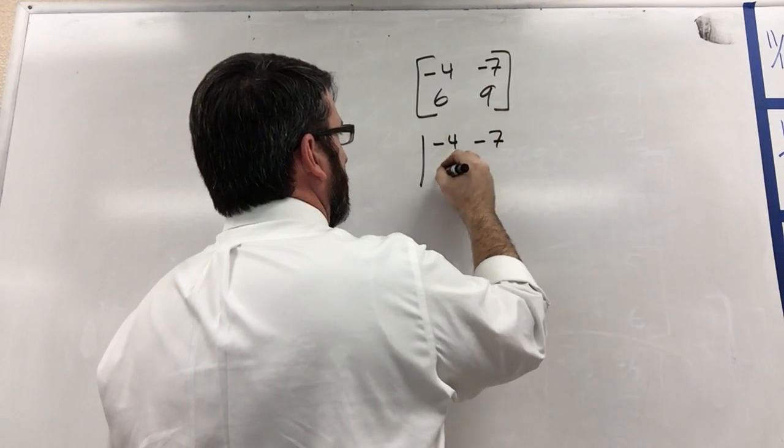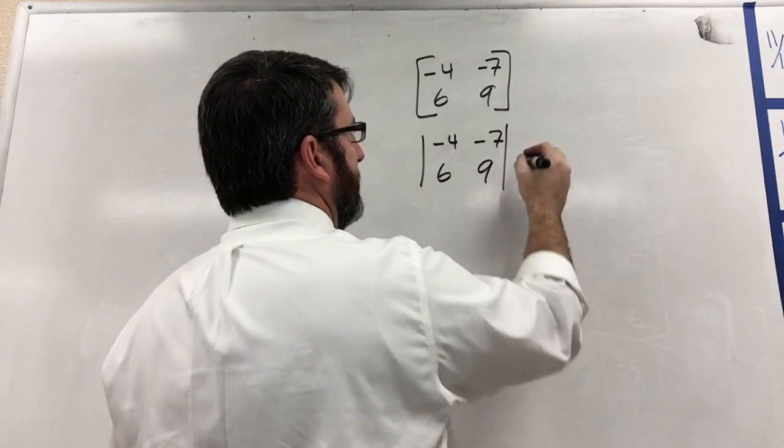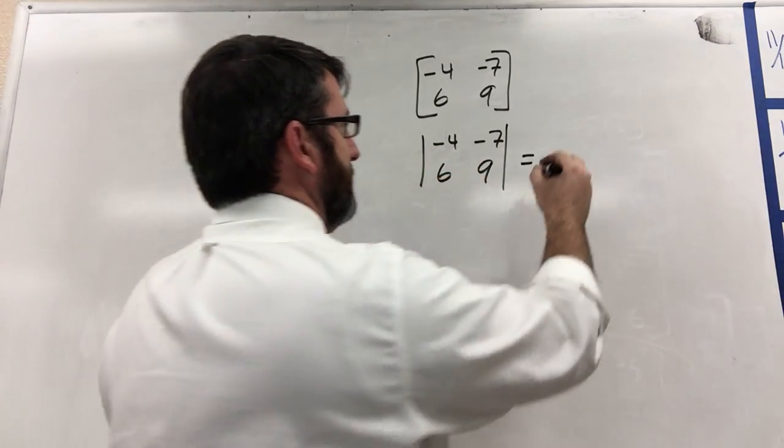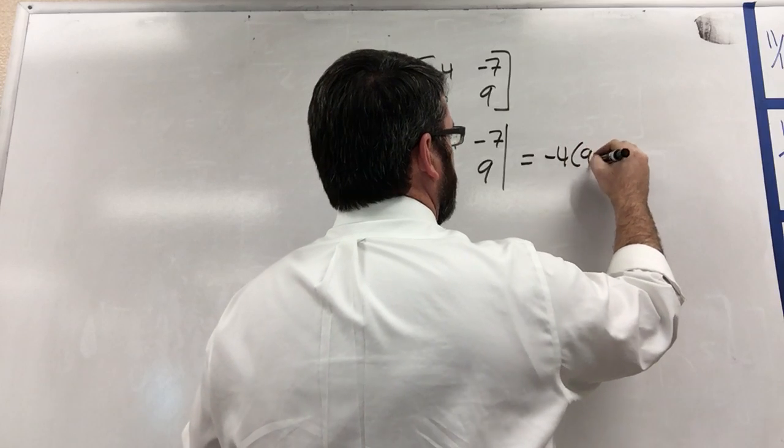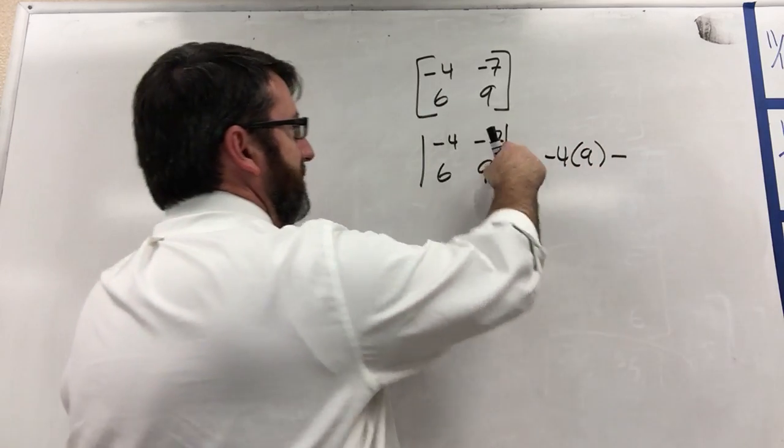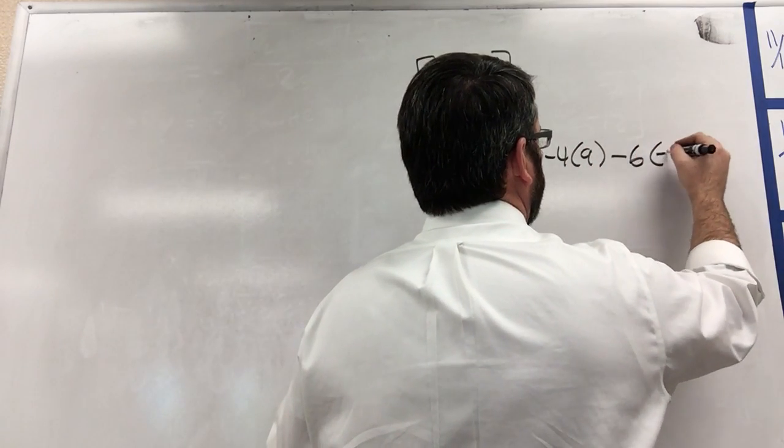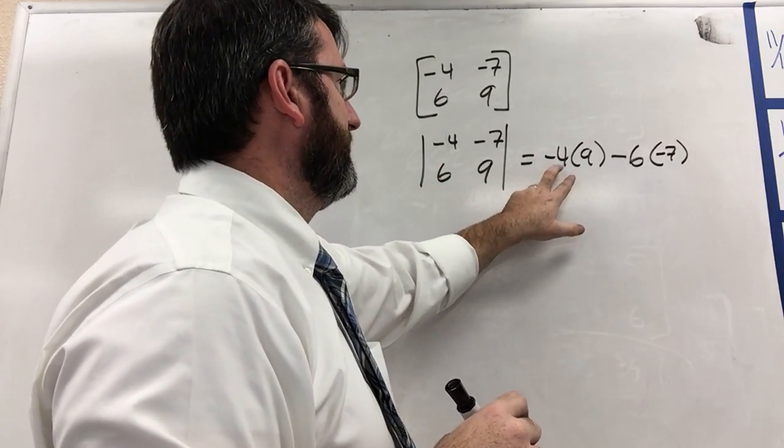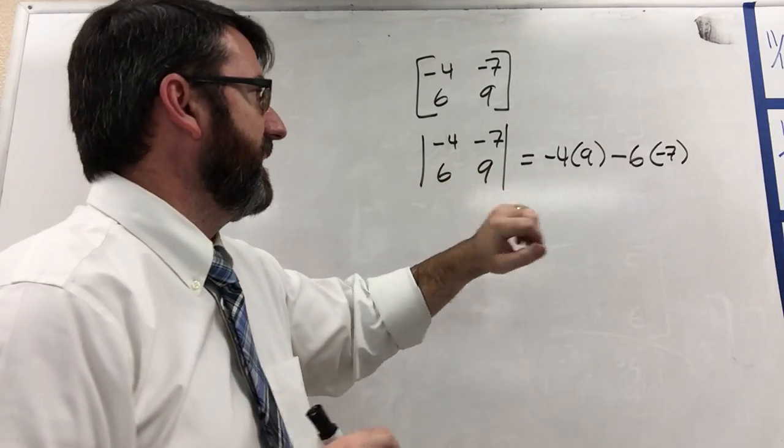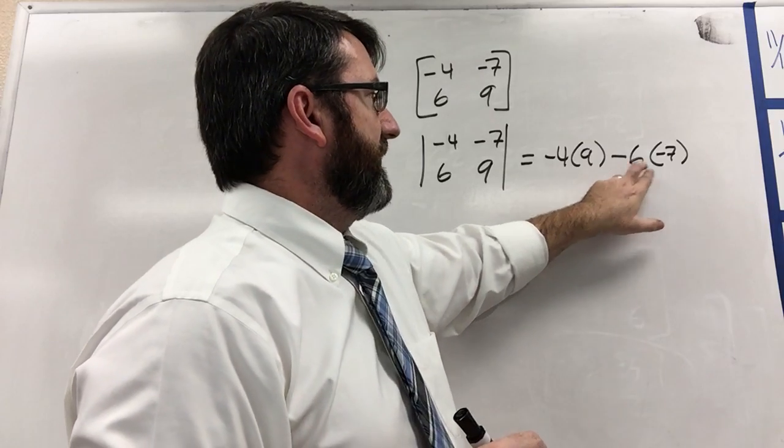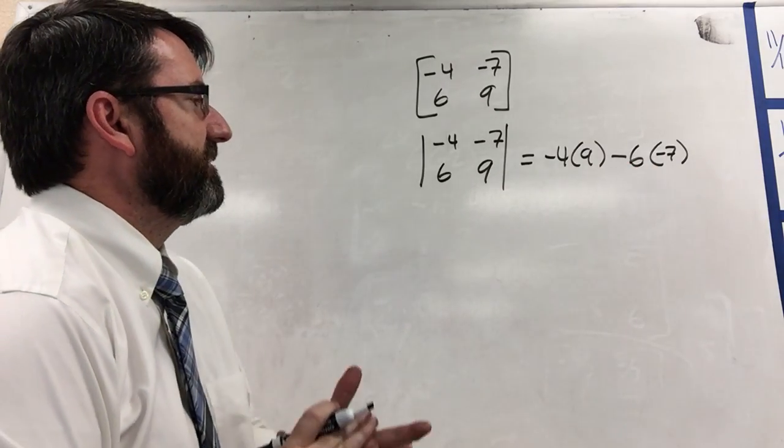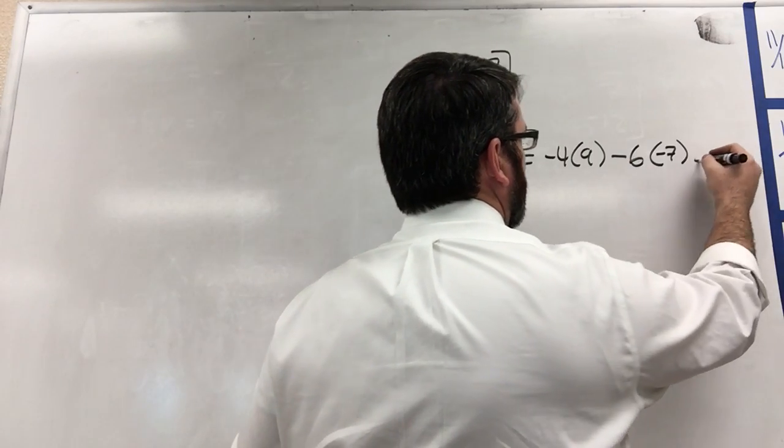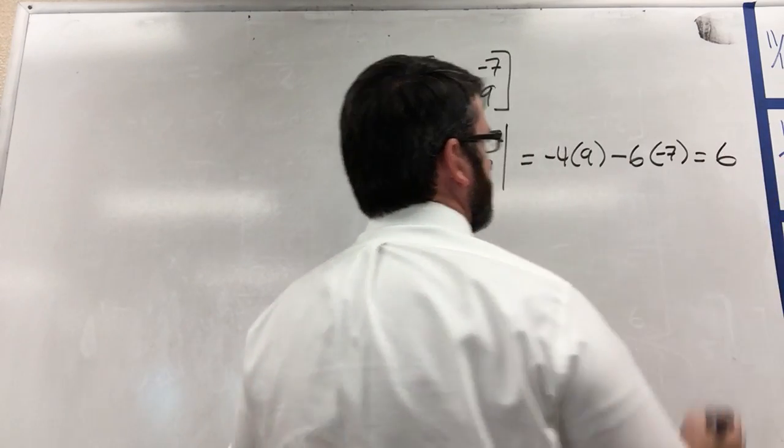So the determinant is going to be equal to this number times this number, negative 4 times 9, minus this number times this number, so 6 times negative 7. That is negative 4 times 9 is negative 36. Negative 6 times negative 7 is positive 42, so our determinant is going to be equal to positive 6.